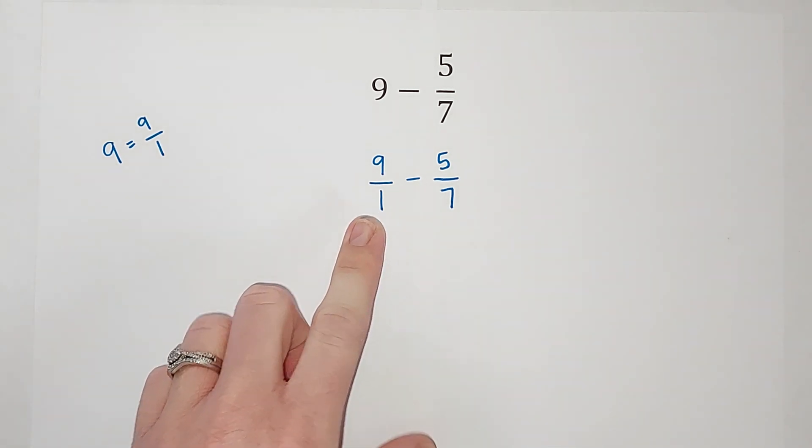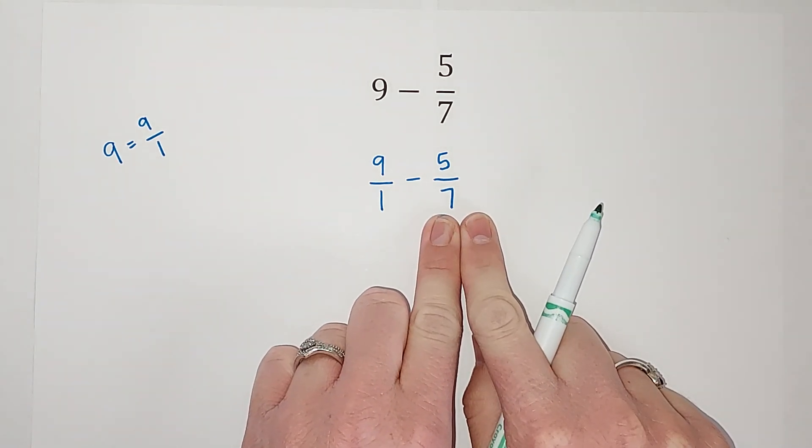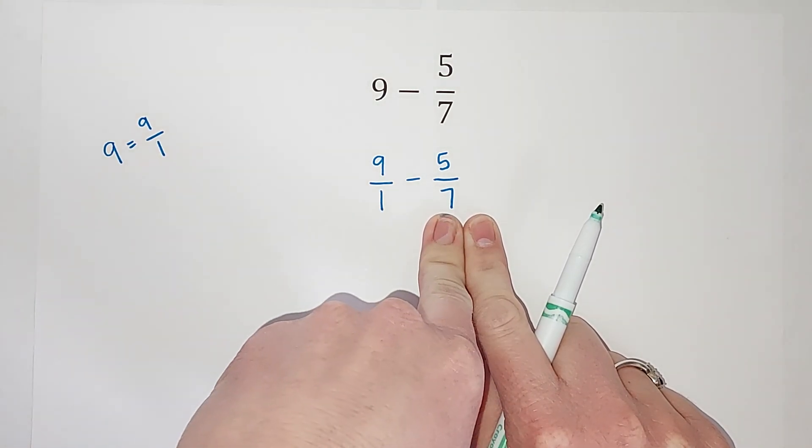When we have a 1, it's pretty easy. The smallest number they both go into is 7. So I don't even have to change this one because its bottom is already 7.